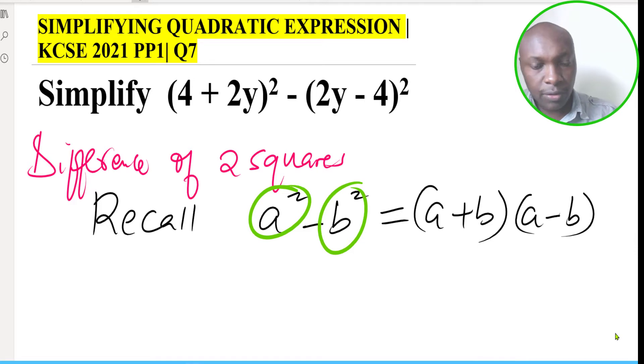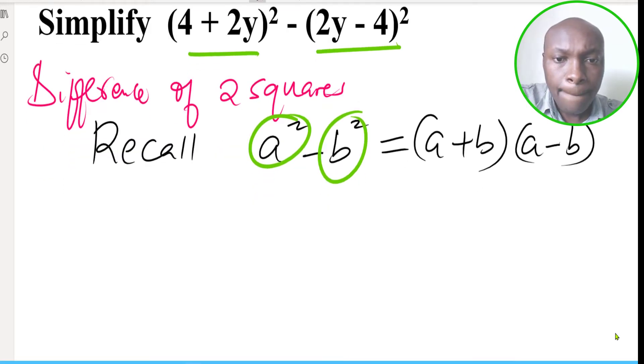So when you look at this again, (4 + 2y)² that is one square, then there's a difference there, and this is another square (2y - 4)², so you're getting difference of two squares. So to solve this or to simplify this, now this is what you can do.